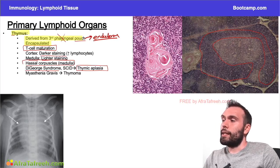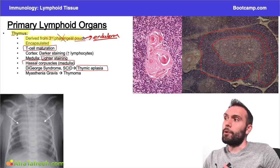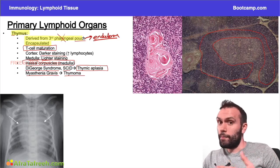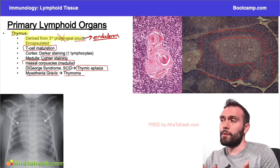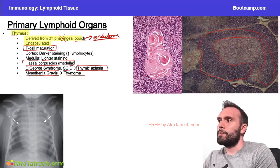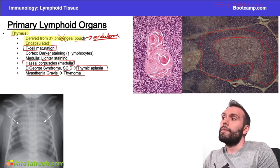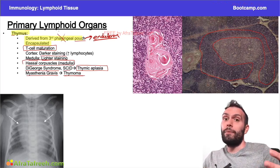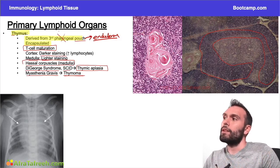DiGeorge syndrome causes thymic aplasia due to abnormalities in formation of the third and fourth pharyngeal pouches. Severe combined immunodeficiency (SCID) is also classically associated with thymic aplasia, wiping out B cell and T cell populations. The thymus also comes up in the context of thymomas and myasthenia gravis — if a patient has solid evidence for myasthenia gravis, the next best step is typically a CT scan to look for a thymoma, which may be releasing antibodies causing the condition.